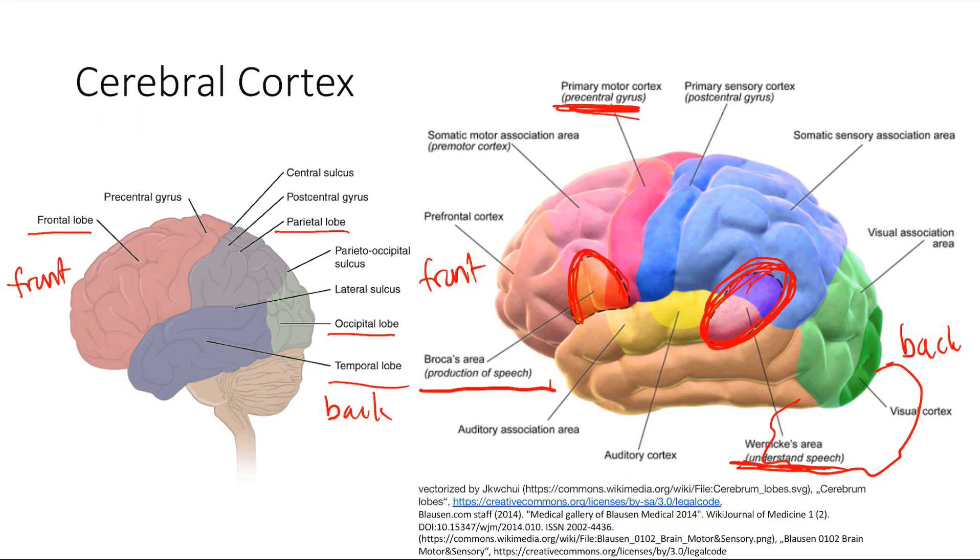This is the central gyrus right here, and the primary motor cortex is precentral. The primary sensory cortex is postcentral. This is pretty easy to confuse. Just remember that the motor cortex is in front of the sensory cortex.